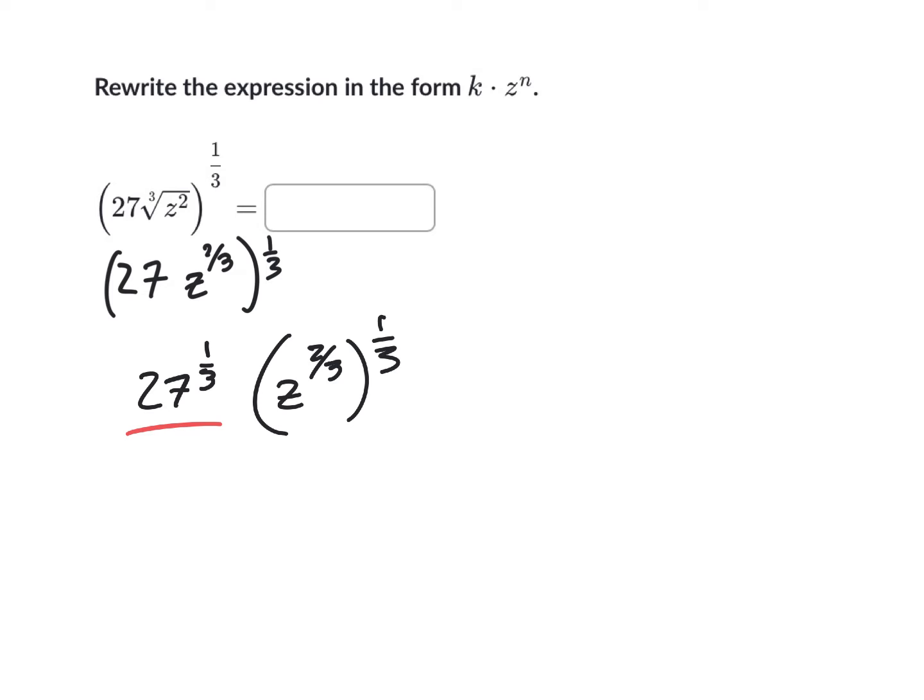We'll deal with this in a second, but let's play with this first. Remember when you have an exponent to an exponent, all you do is multiply. So this is just like saying two-thirds times one-third. And multiplying fractions is pretty easy. All you do is just multiply straight across. So two times one is two, three times three is nine. So this becomes z to the two-ninths.